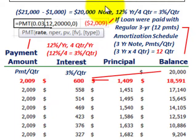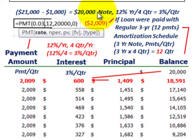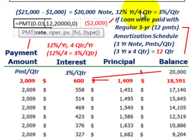The customer buys the car for $21,000 and pays $1,000 down, so $20,000 is sitting on this loan that they'll have to pay back. The interest rate is 12% per year. We're looking at it on a quarterly basis, so we divide 12% by four quarters, giving us a 3% per quarter interest cost.